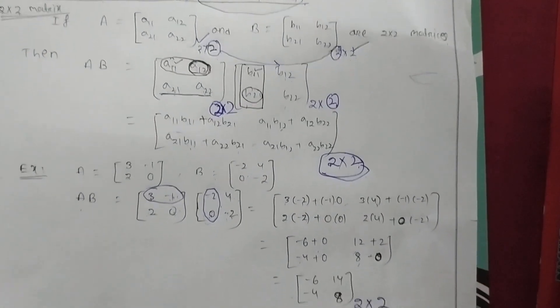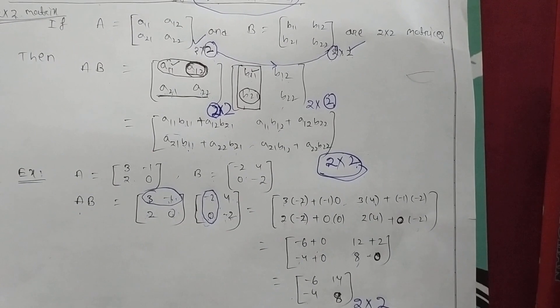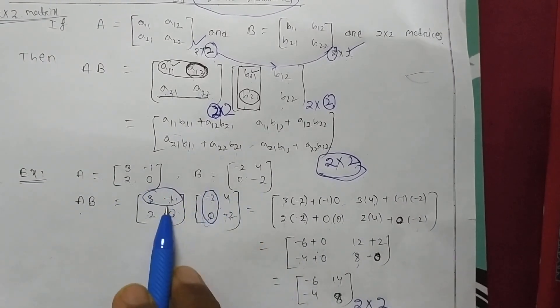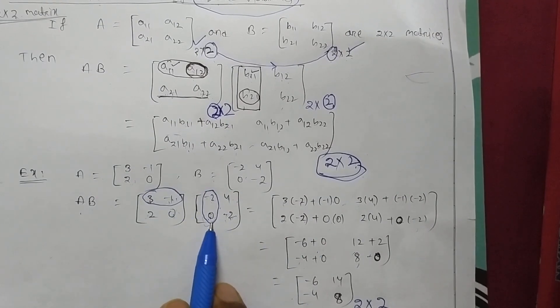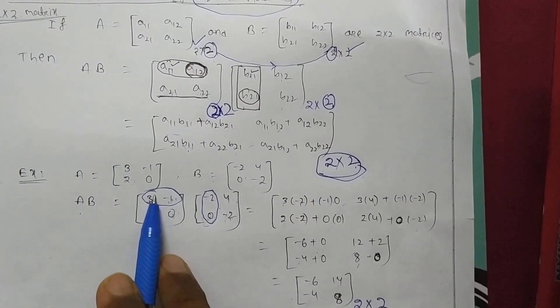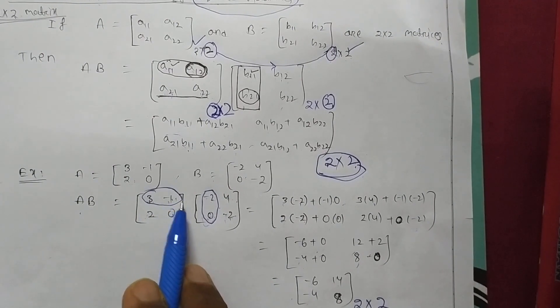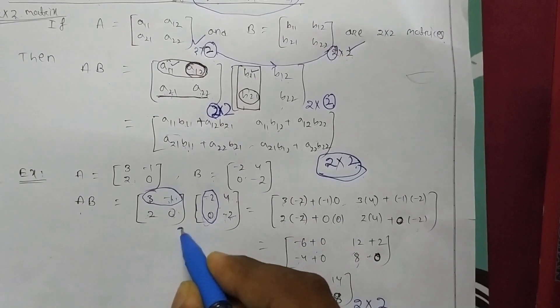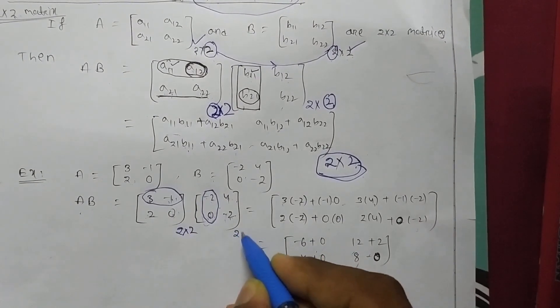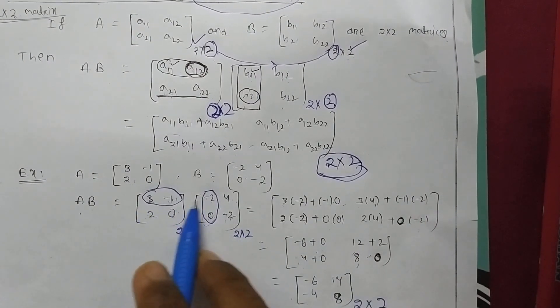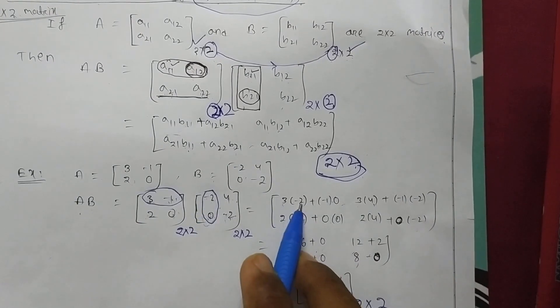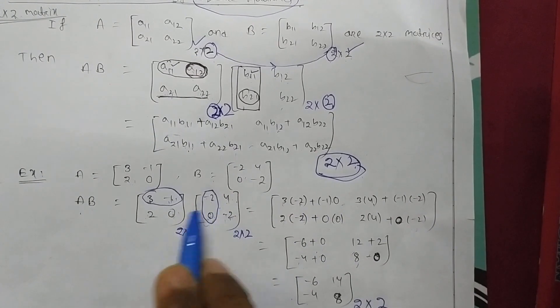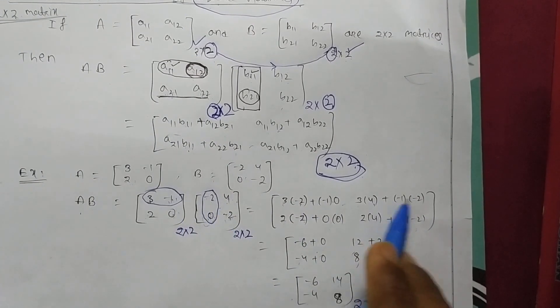Now I am taking one example. You can see I am taking one A matrix and another matrix B, and I am multiplying both matrices. Here also we will follow the same procedure: elements of first row of first matrix to the elements of first column of the second matrix. And here first matrix order is 2 cross 2 and second matrix order is 2 cross 2. 3 multiplication minus 2, you can see, minus 1 multiplication 0. Then 3 multiplication 4, minus 1 multiplication minus 2.